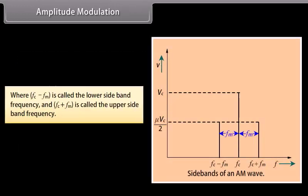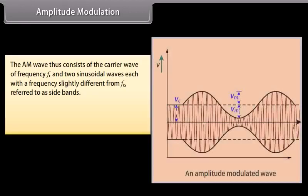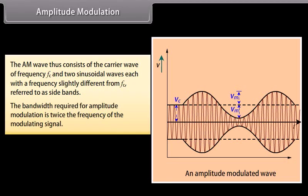FC − FM is called the lower sideband frequency and FC + FM is called the upper sideband frequency. The AM wave consists of the carrier wave of frequency FC and two sinusoidal waves, each with a frequency slightly different from FC, referred to as sidebands. The bandwidth required for amplitude modulation is twice the frequency of the modulating signal.